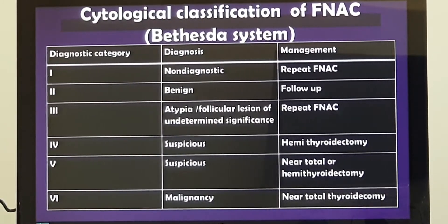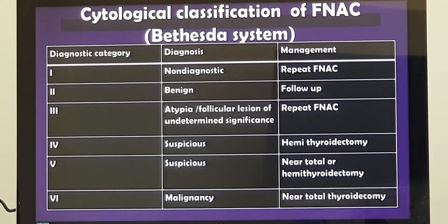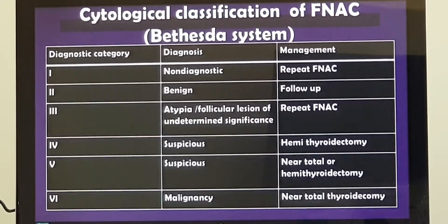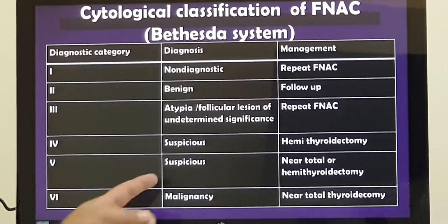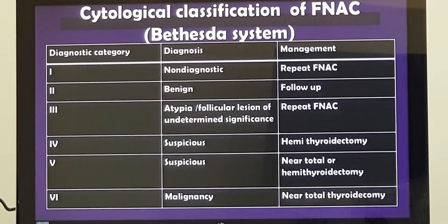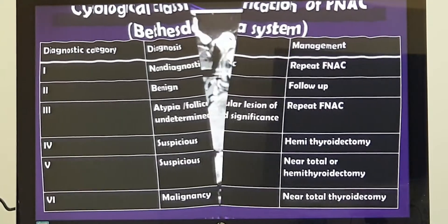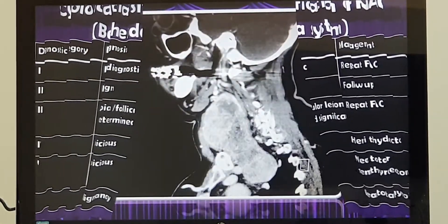Type 3 is atypical cells with undetermined significance — we need to repeat the fine needle aspiration to be sure. Types 4 and 5 are suspicious — we will definitely go ahead and do surgery. Type 6 is confirmed malignancy — there is no doubt surgery is needed.